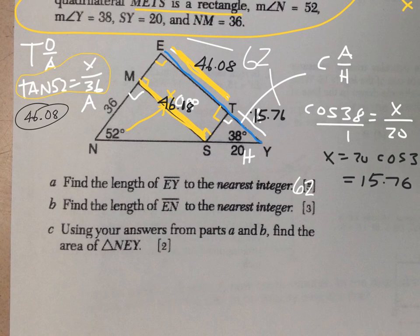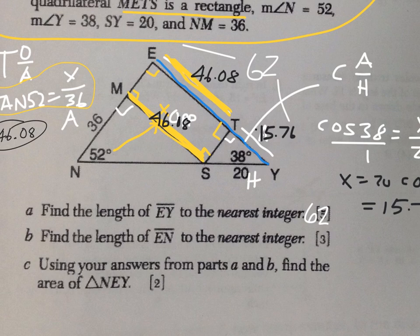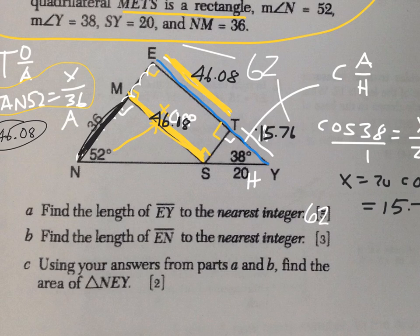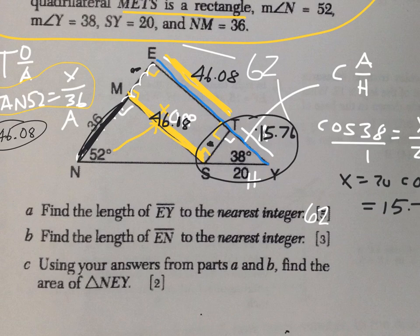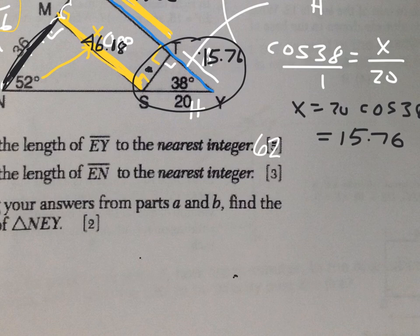Alright. So finding EN, first of all I'll have to find it in the picture. To find EN, looks like I can use the Pythagorean theorem to figure that out because to find out how far it is from E to N, I've got 36 so far, I just need to find out this missing piece right here from M to E. Now M to E is the same as T to S, and in this area here I can use Pythagorean theorem to find out how far it is from S to T.